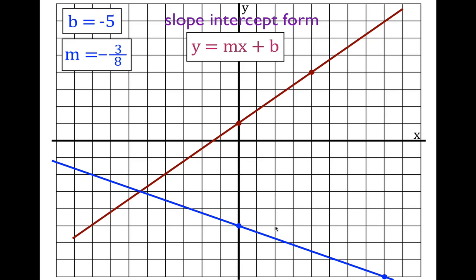This line has a negative slope — it slopes down — while the previous line had a positive slope. We could also look to the other side where it crosses and go up three to the left eight, giving minus three over eight — the same slope. Substituting those values in, the equation for that line is y equals minus three-eighths x minus five.